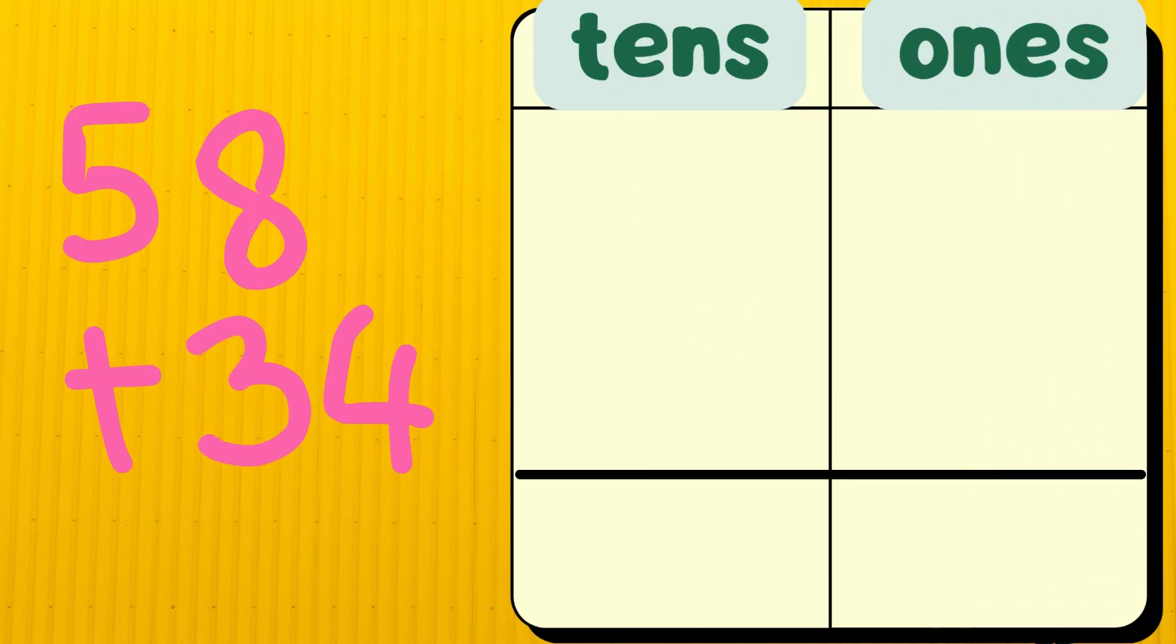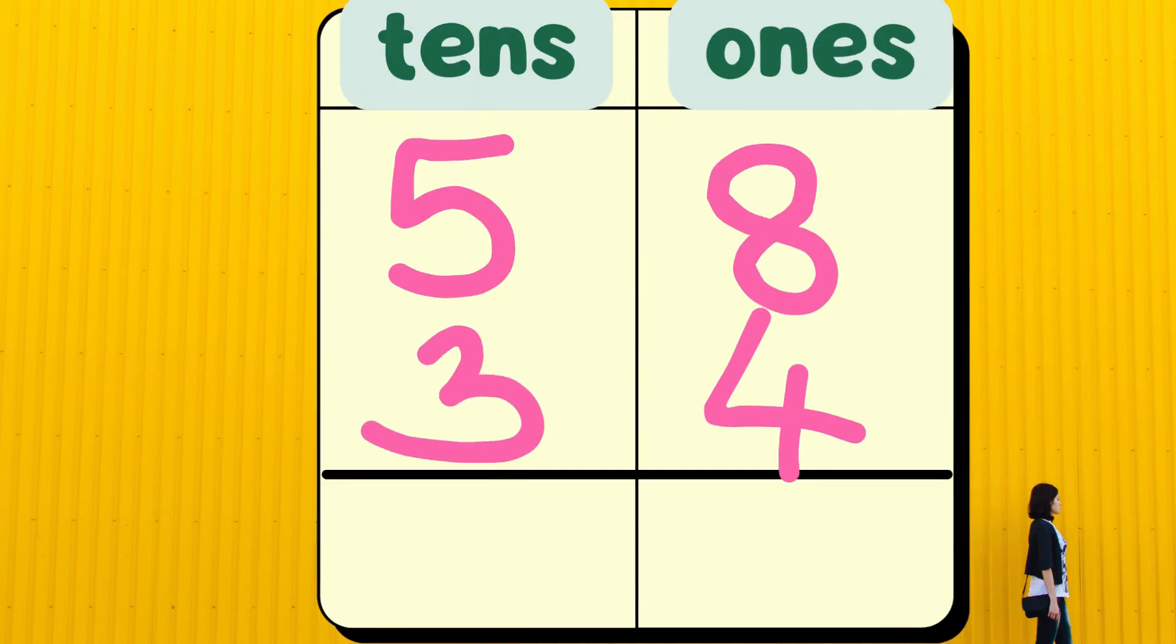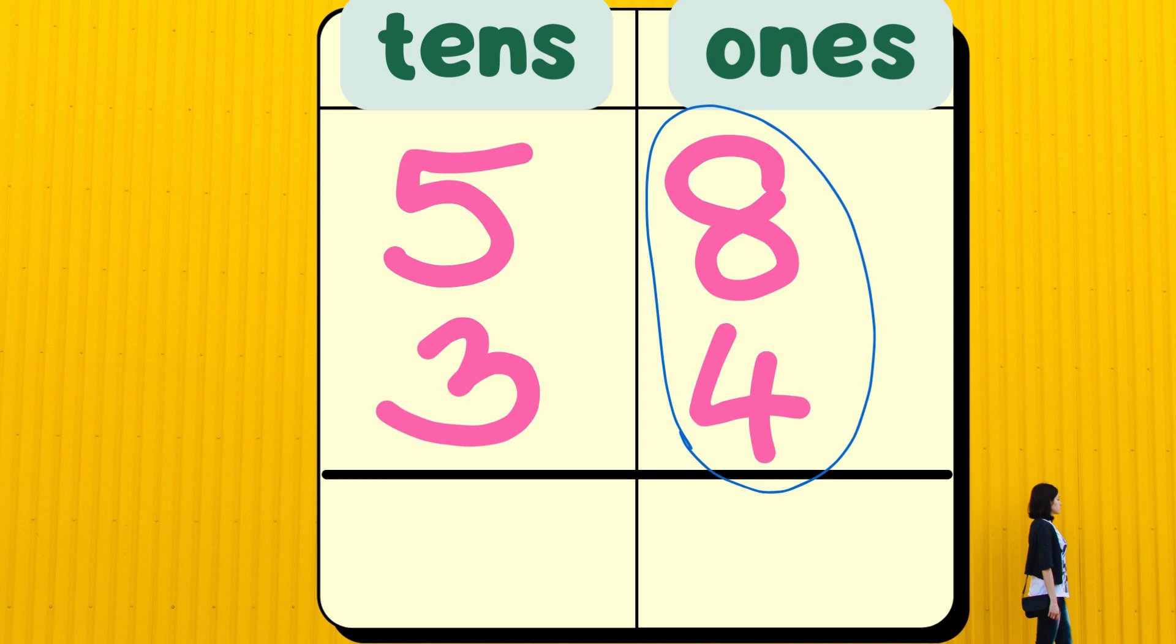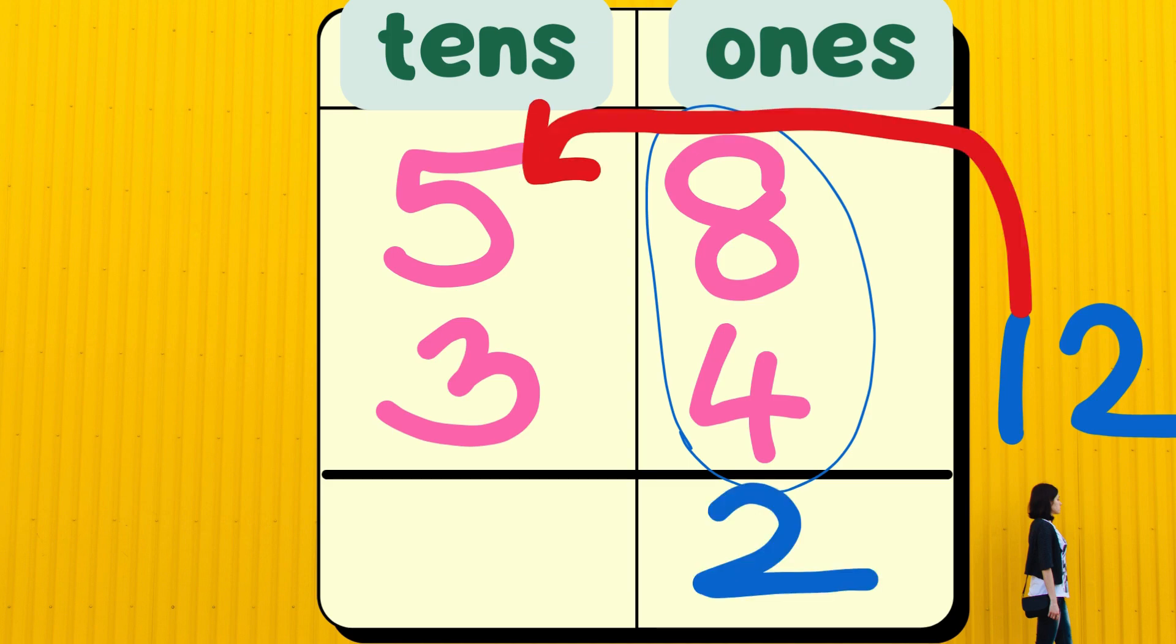Let's add 58 and 34. Write 58 and 34 in the base 10 chart. Now let's add the 1s. When I add 8 and 4, I get 12. 12 has 1 10 and 2 1s. So, we need to move the 10 to the 10s place, and keep just the 2 1s in the 1s place.